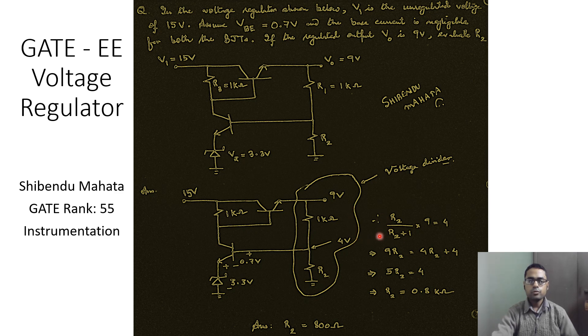So this is R2 by R2 plus R1 multiplied by the voltage that is obtained at the output node, which is equal to 9 volt, and this must equate to the voltage at this node, which is equal to 4 volt.